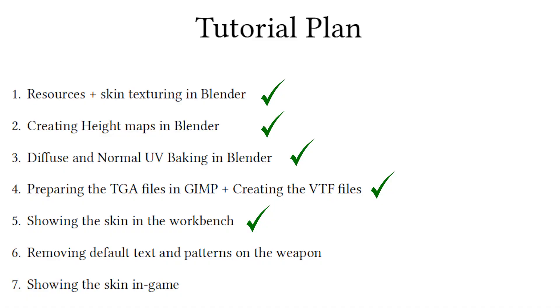And with this we finish the fifth part of the CSGO skin making tutorial. In the next video I will talk about how to remove texts and other unwanted stuff from the weapon's ambient occlusion map.